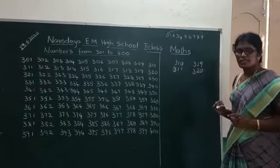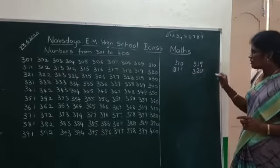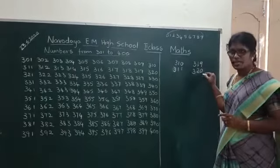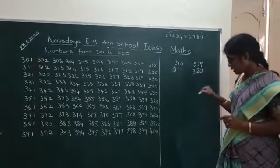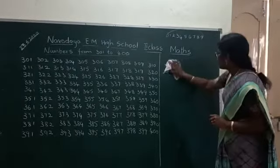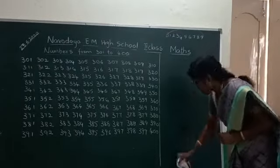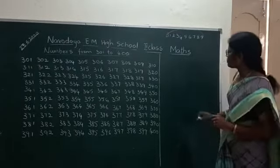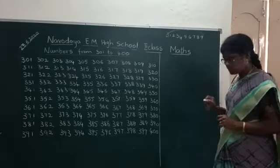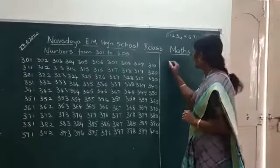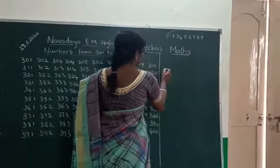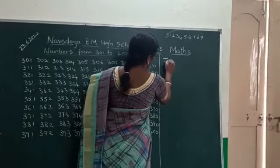Okay children. In next class also I will explain again. Now you will learn number names. Number names from 10 to 100.